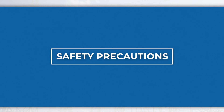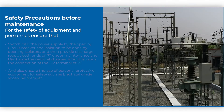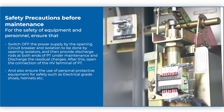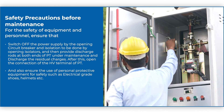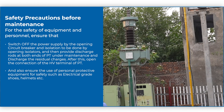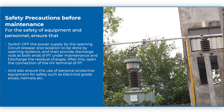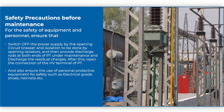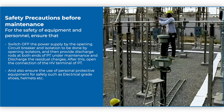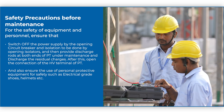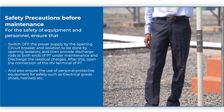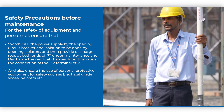Safety precautions before maintenance: For the safety of equipment and personnel, ensure that the power supply is switched off by opening the circuit breaker, and isolation is done by opening isolators. Then provide discharge rods at both ends of PT under maintenance and discharge the residual charges. After this, open the connection of the HV terminal of PT. Also ensure the use of personal protective equipment such as electrical grade shoes, helmets, etc.